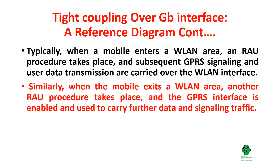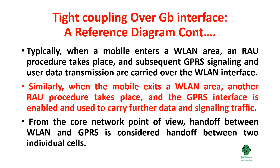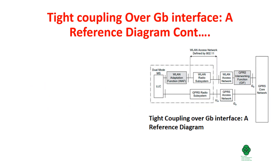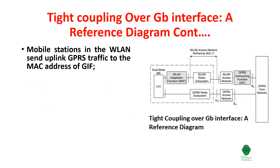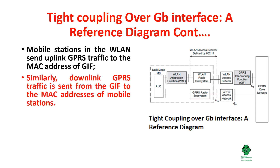Similarly, when the mobile exits a WLAN area, another RAU procedure takes place and the GPRS interface is enabled and used to carry further data and signaling. From the core network point of view, handoff between WLAN and GPRS is considered handoff between two individual cells. Mobile stations in the WLAN send uplink GPRS traffic to the MAC address of the GIF, and downlink GPRS traffic is sent from the GIF to the MAC address of the mobile stations.